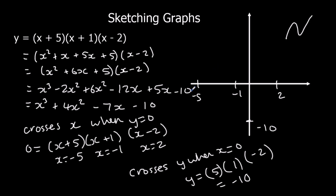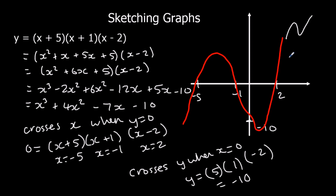So we do the sketch: starting at the bottom, up, down, and up again. Not a perfect attempt — I've actually missed the points I was aiming for — but we've got the shape right and the points right where it crosses.